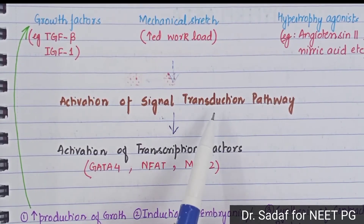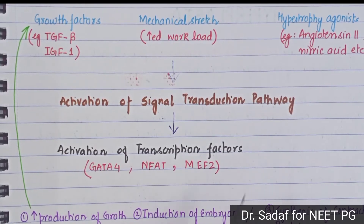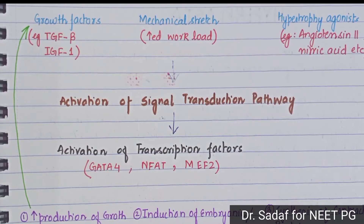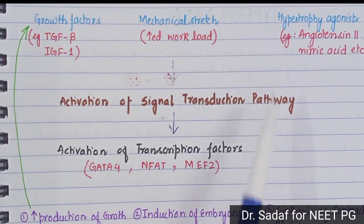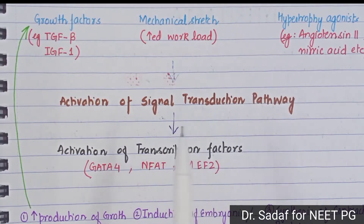When we activate the signal transduction pathway, we activate transcription factors such as GATA4, NFAT, and MEF2. These transcription factors then drive the production of growth factors, induction of embryonic or fetal genes like ANF (atrial natriuretic factor), and synthesis of contractile proteins, ultimately increasing growth.